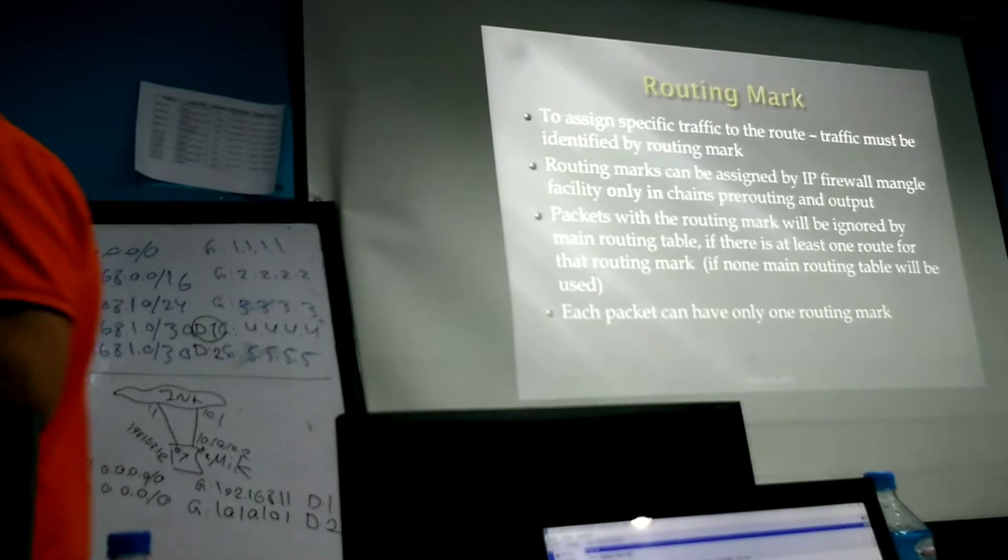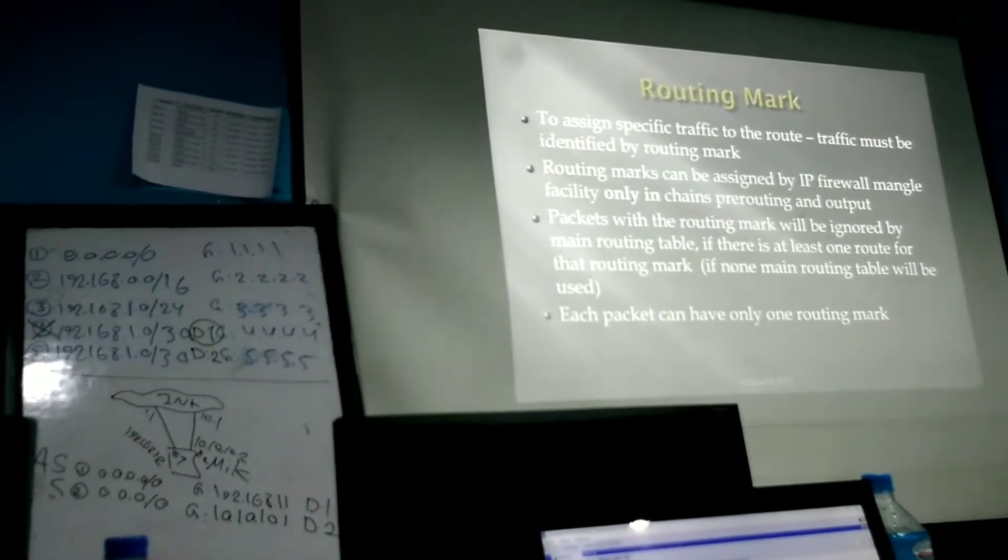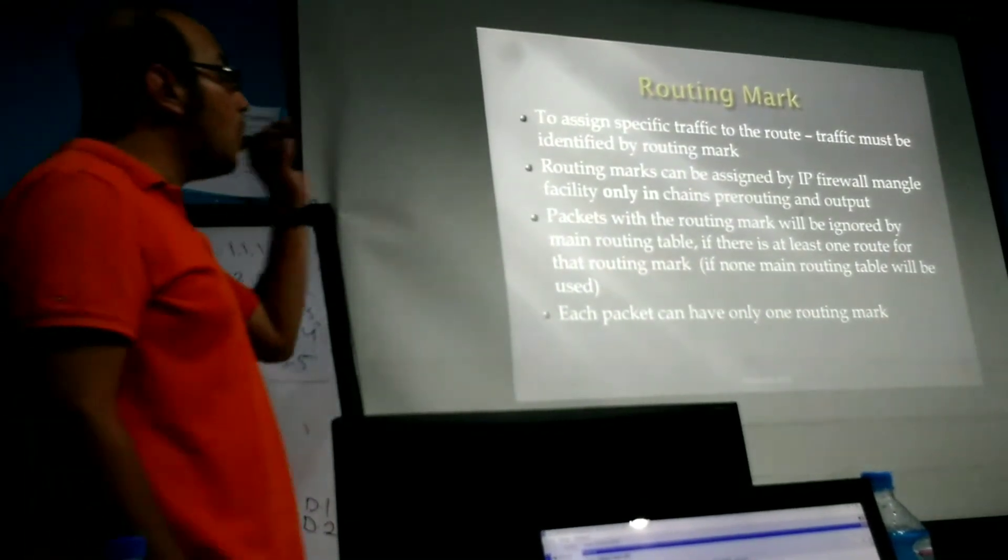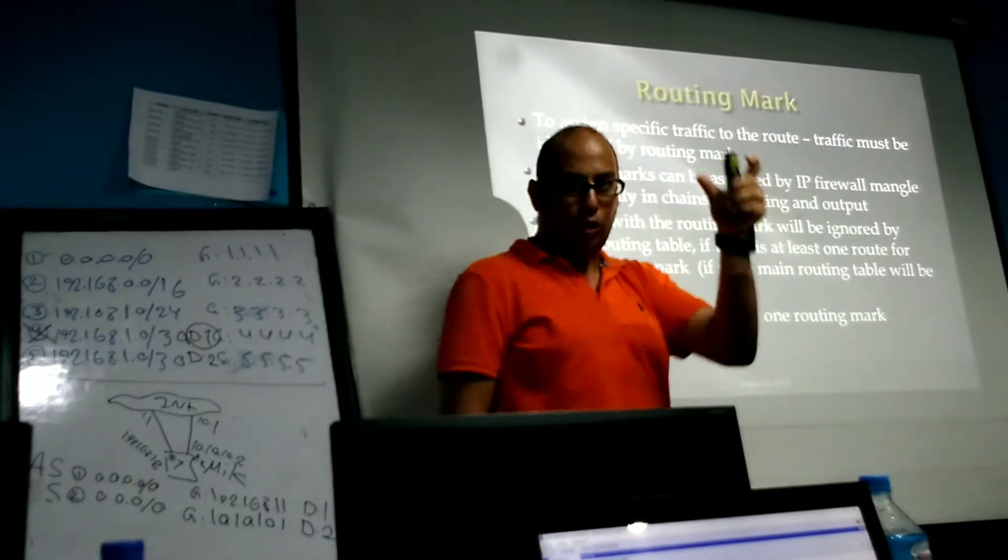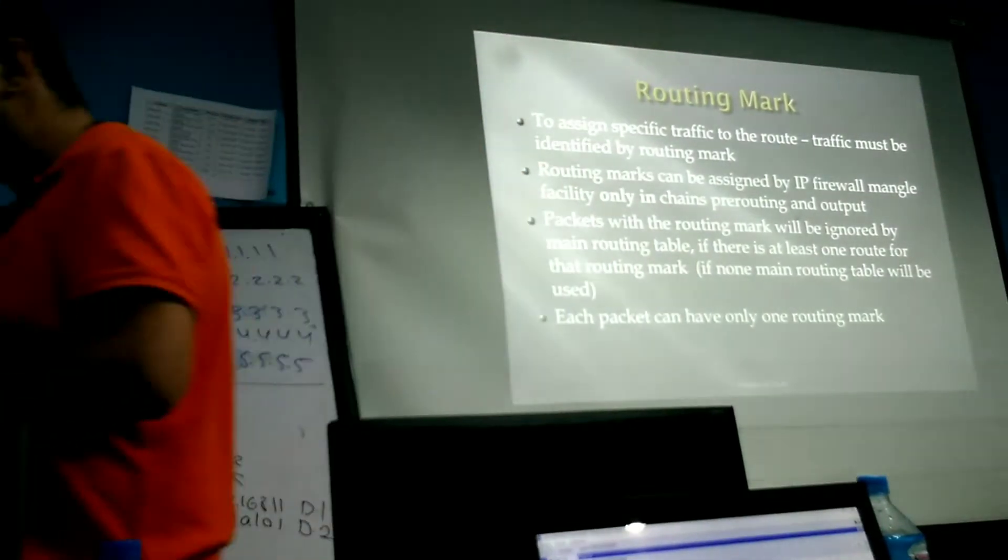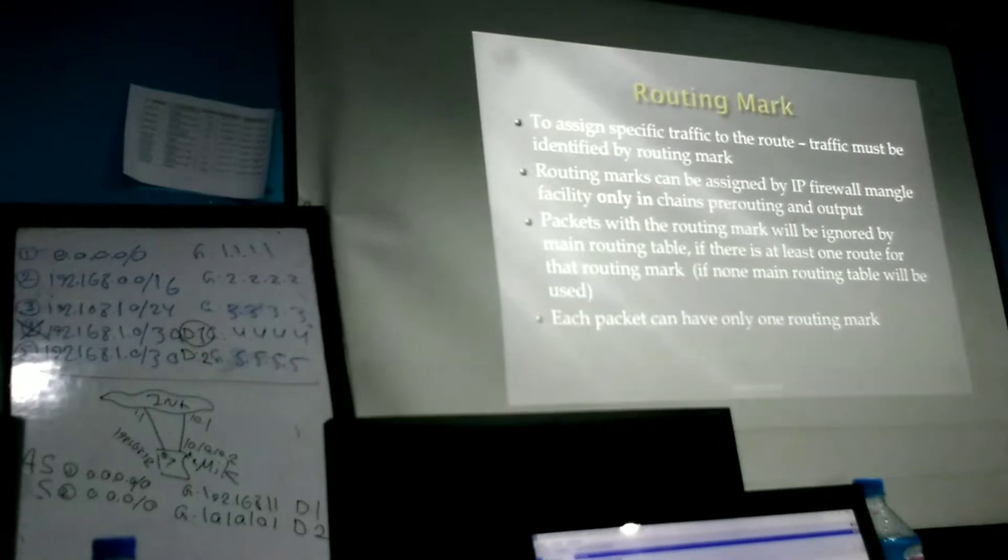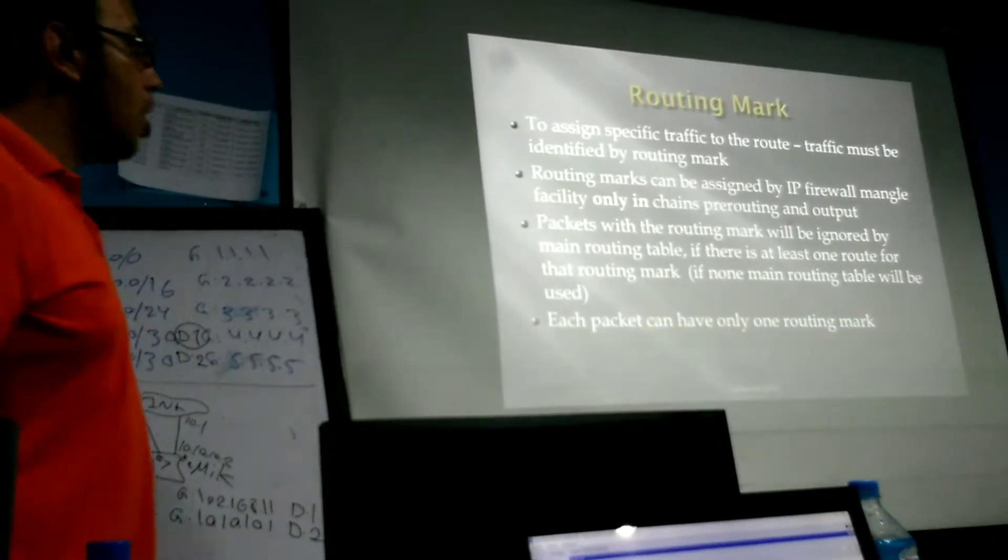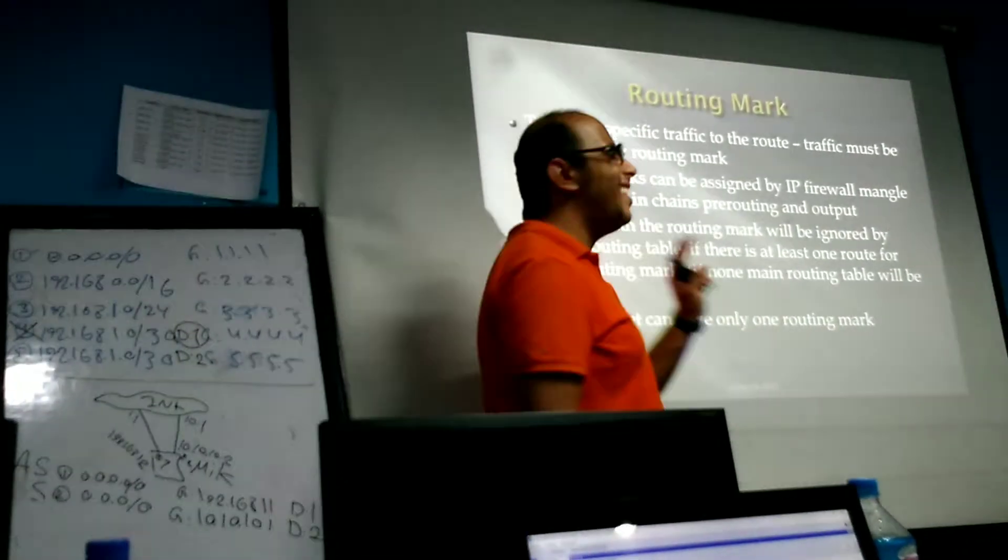Routing mark is just a traffic identification. Then you can assign that traffic to the route by choosing the routing mark in the routing table. Routing mark can be assigned by IP firewall mangle, only in two chains: pre-routing and output.